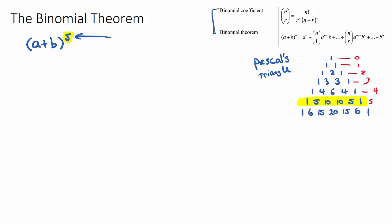If we look at the fifth row of Pascal's triangle and look at all of those numbers — one, five, ten, ten, five, one — they are actually all of the coefficients, meaning the number at the front, of our six terms in our expansion. So one, five, ten, ten, five, one will be the coefficients of our six terms.